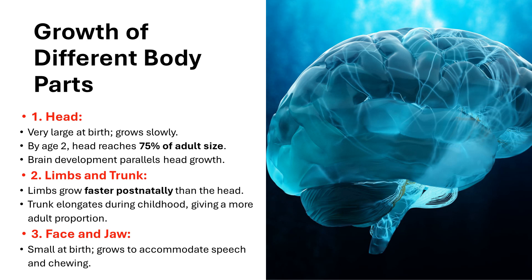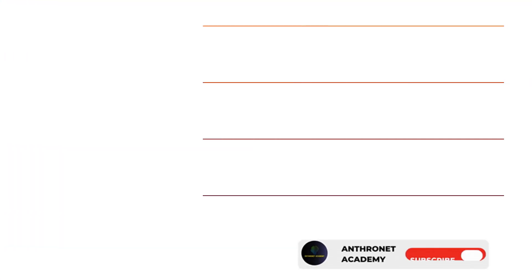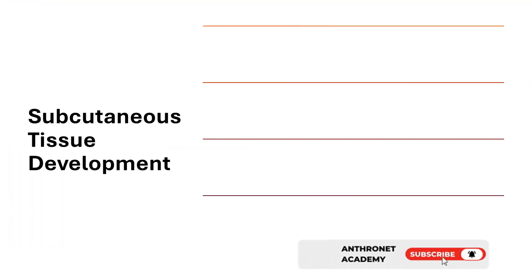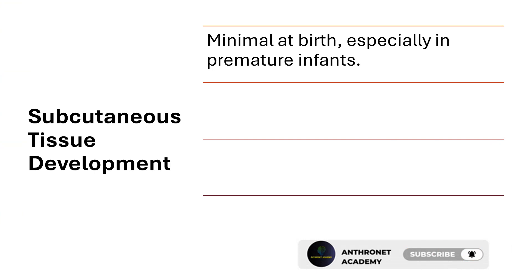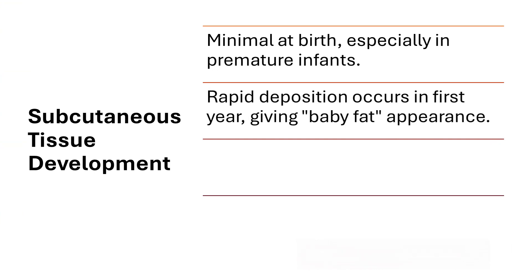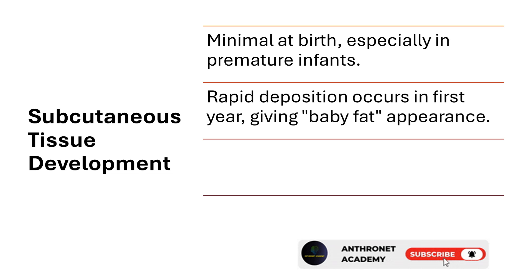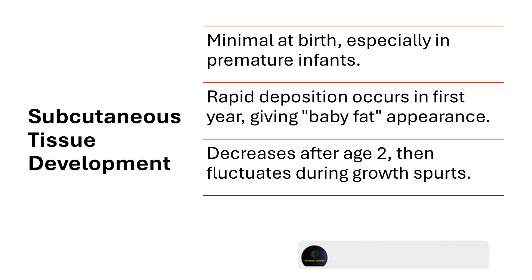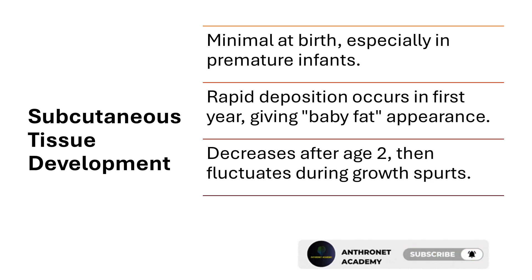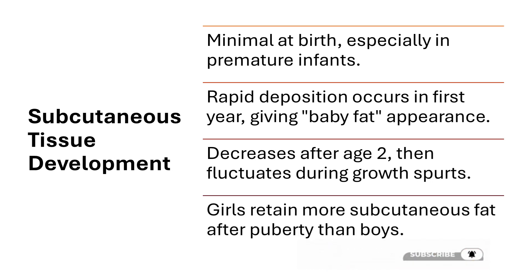Limbs and trunk: limbs grow faster postnatally than the head; the trunk elongates during childhood, giving a more adult proportion. Face and jaw: small at birth, grows to accommodate speech and chewing. Subcutaneous tissue development: minimal at birth, especially in premature infants; rapid deposition occurs in the first year, giving a baby-fat appearance; decreases after age 2, then fluctuates during growth spurts; girls retain more subcutaneous fat after puberty than boys.